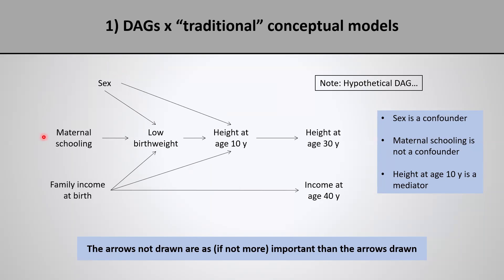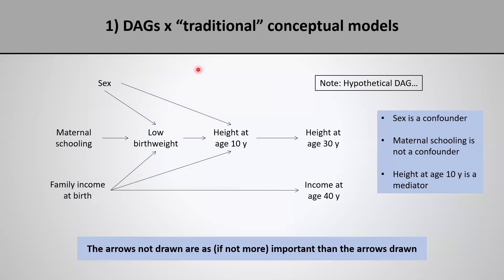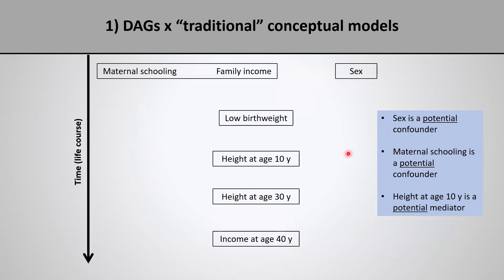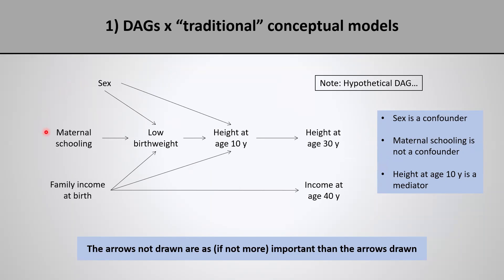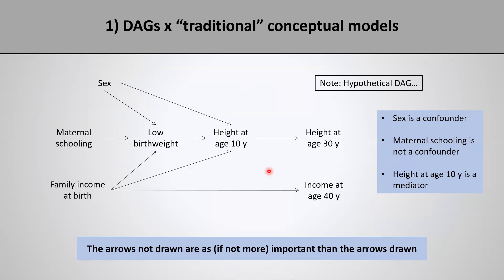Notice that maternal schooling in our DAG is not a confounder, because it causes low birth weight but does not cause the outcome height at age 30 independently of its effect on the exposure. Maternal schooling was a potential confounder in the previous model, but not in the DAG — that's because the traditional model doesn't explicitly state whether this is the case. In the DAG, height at age 10 is a mediator because it is affected by the exposure and it causes the outcome. Again, the previous model only said height was a potential mediator, but now our DAG makes it explicit that mediation is indeed the case.